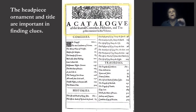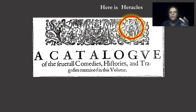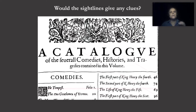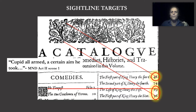The headpiece ornament and title are important in finding clues. Drawing lines from the figures inside it shows us the way. Here is Eros on the left, Heracles on the right, and Juno in the middle. The sight line targets from Eros are the Cali Greyhound below him and the uppercase decorative initial T — they are the only figures which could conceivably point to significant items. As in A Midsummer Night's Dream Act 2 Scene 2: 'Cupid all armed, a certain aim he took.' Eros points to the first page of the first part of Henry IV, while the Hound points to the first page of the first part of Henry VI. A sight line drawn from the decorative T points to the wrong page number for Henry V.